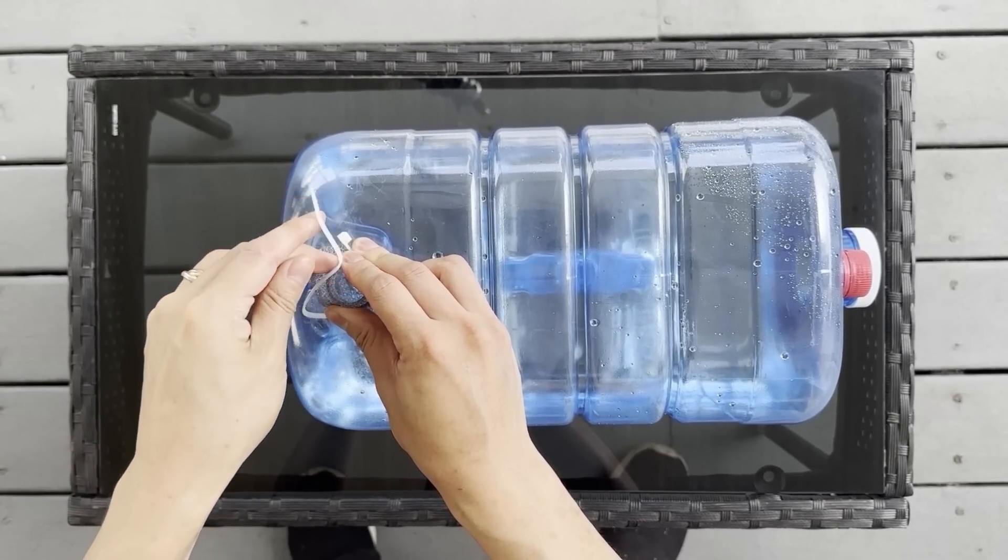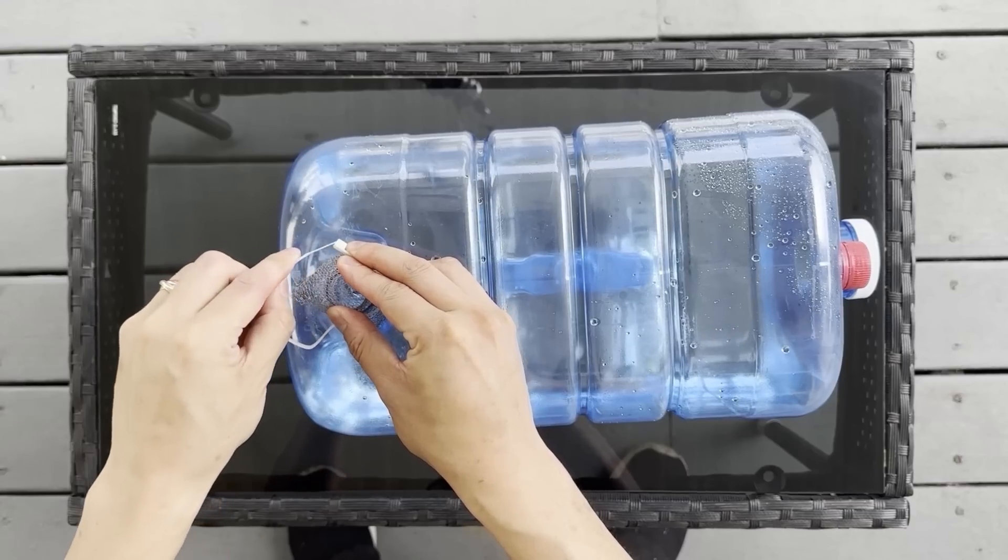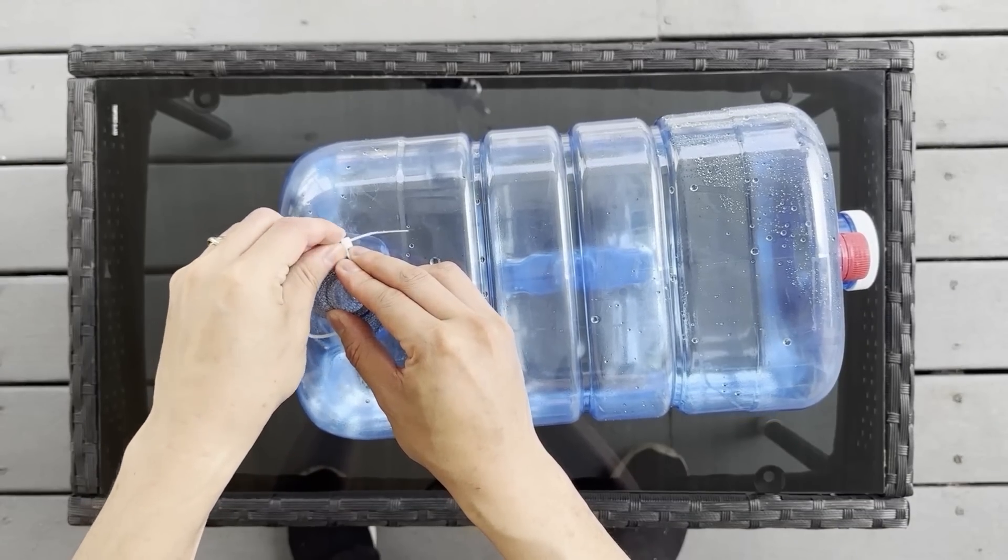Ideally, it should be tight enough to hold the mesh in place, but loose enough so it can slip on and off when needed.